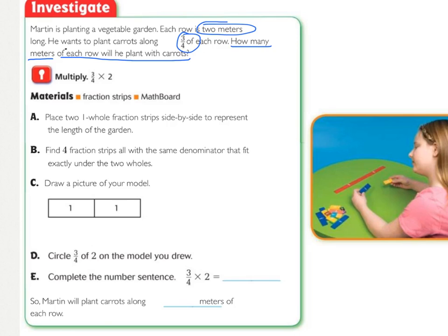Our story problem leads us to the multiplication sentence of 3 fourths times 2. The 2 is because each row is 2 meters long, and then 3 fourths, because we want 3 fourths of each 2. Looking at part C, we're going to draw a picture of the model. So we have one hole here, and then another hole here, because if you put those together, 1 and 1 equals 2. And that's the length. This represents the length of each row.